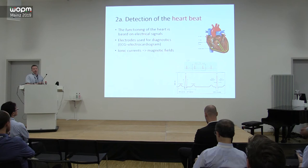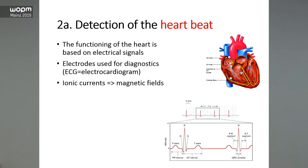The functioning of the heart is based on electrical signals, which you can typically measure by placing electrodes on the chest of a person to record the electrocardiogram. This shows an example: the spikes allow you to infer heart rate. The spikes are called the QRS complex, and there are other features like the P wave and T wave, which are important for diagnostic purposes.